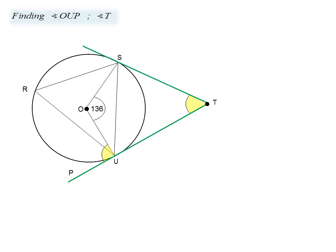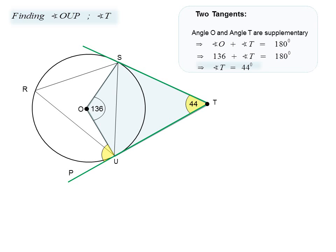Our final task in example number three is to find angle OUP and angle T, both shown in yellow. Let us start by using our third clue — that we have two tangents. Recall that the opposite angles in the quadrilateral formed between the two tangents and the center are supplementary.